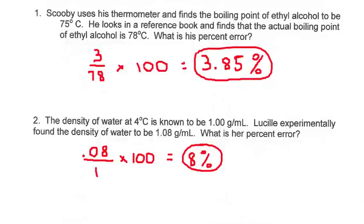And your denominator is always the number that is either found in the textbook or found on the label. So in this case, he looked at a reference book, and so the actual boiling point is 78 degrees. So that's what your denominator is.